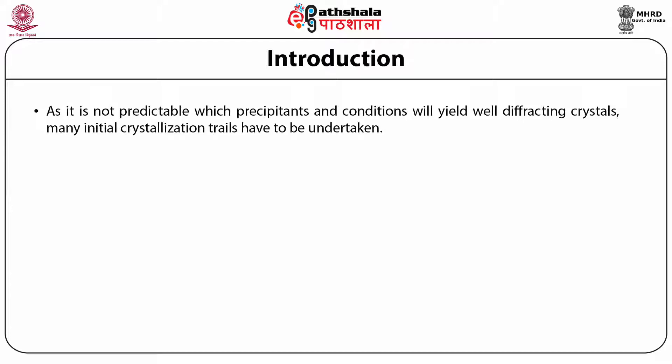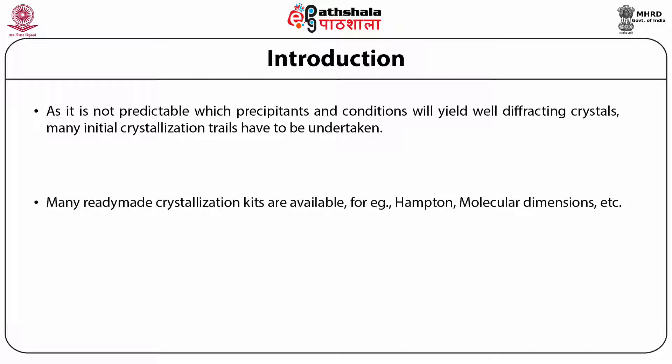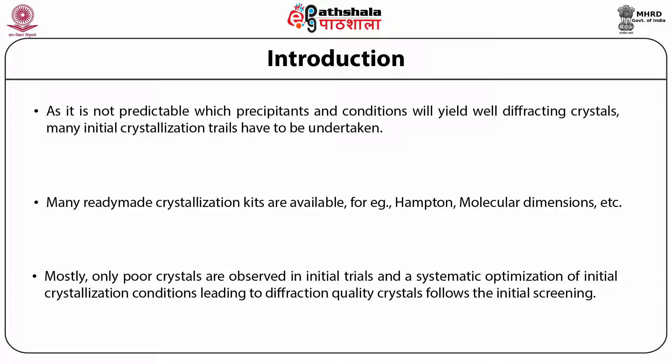As it is not predictable which precipitants and conditions will yield well-diffracting crystals, many initial crystallization trials have to be undertaken. Many ready-made crystallization kits are now available, for example Hampton, Molecular Dimensions, etc. One can even prepare their own kit with various buffer concentrations. Mostly only poor crystals are observed in initial trials, and systematic optimization of initial crystallization conditions leads to diffraction quality crystals. Diffraction quality crystals follow the initial screening.